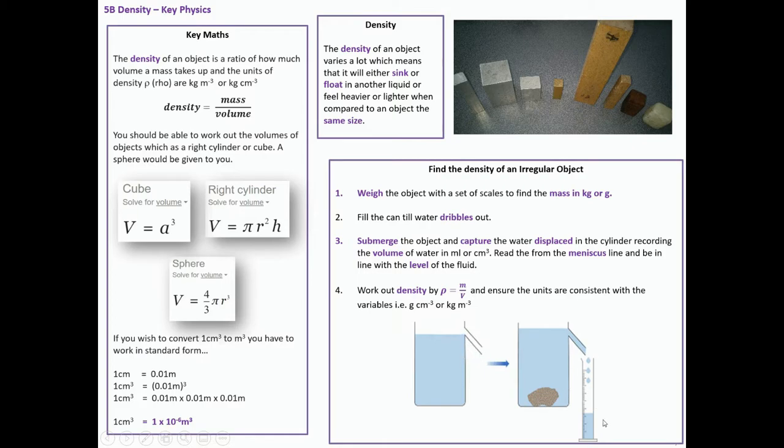The water that dribbles out and is captured in the measuring cylinder is the volume of water. I work out the density by doing density equals mass over volume. I ensure the units are consistent with the variables I put in. That's a really simple method for finding the density of an irregular object. If it was regular, I could just put it on the scales and measure it with a ruler. So that's density, IGCSE topic done.